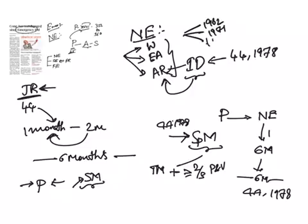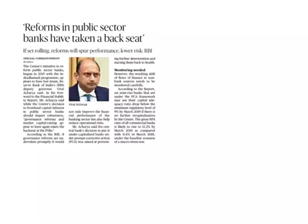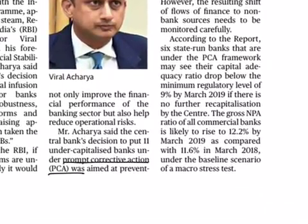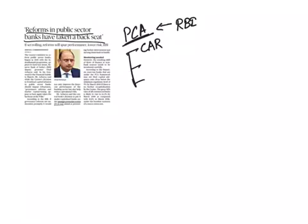The second article is, reforms in public sector banks have taken a backseat. In this, we have to see the word Prompt Corrective Action. This is in news from several months because this is the tool used by RBI to make banks follow certain guidelines. It is RBI system in which it starts corrective action when in any of these three factors: capital adequacy ratio, non-performing assets, and return on assets. When bank does not perform well in any of these three factors, then RBI starts its Prompt Corrective Action.